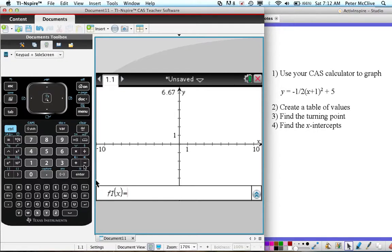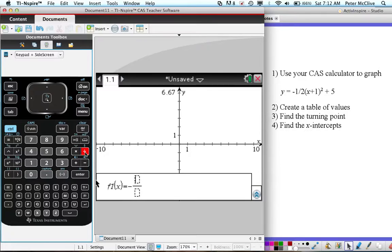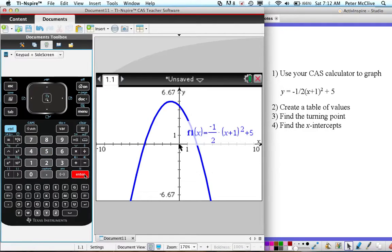Let's start doing that, so minus, now I want a fraction so I'm going to use control and then divide which gives me the fraction option. I've got 1, then arrow down, over 2, then arrow right, and now open brackets x plus 1, close brackets all squared, plus 5. That pretty much looks like what it is and now we just hit enter and we should get the graph.